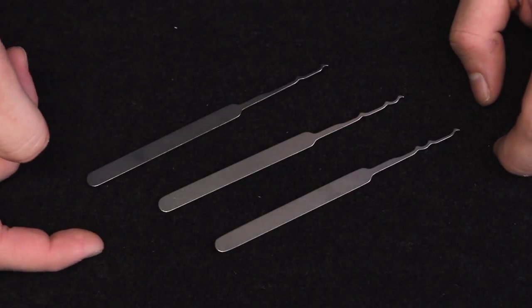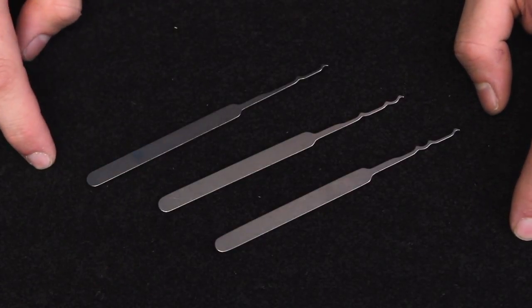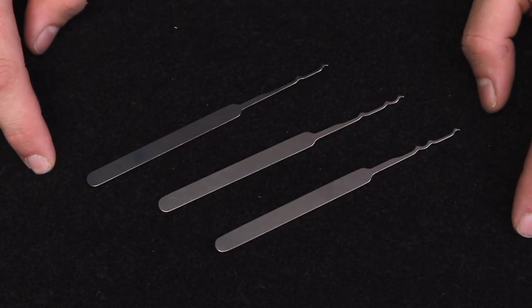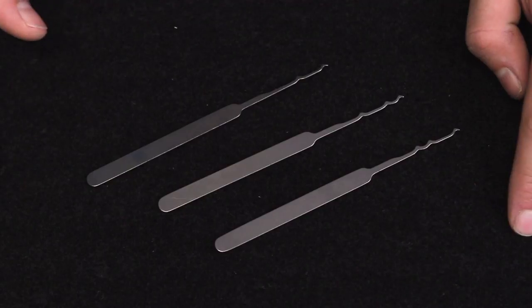Today we're taking a look at the Bogota Titanium Flats 3-Piece Expansion Toolset. This is a supplemental set to the popular Bogota Titanium Flats 4-Piece Toolset. So this 3-Piece Toolset does not include a tension or torsion wrench.